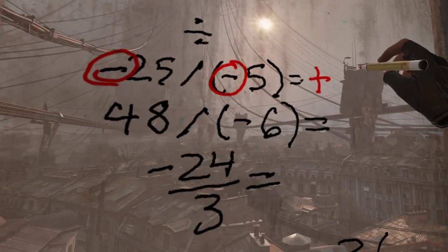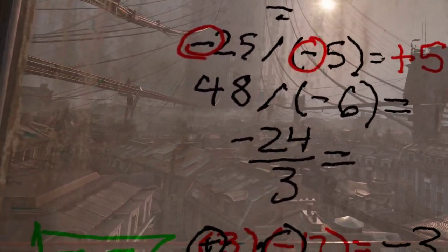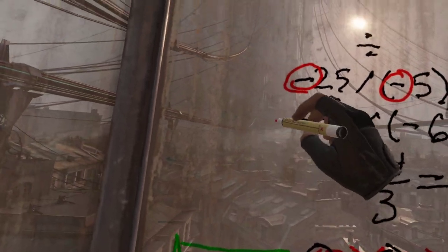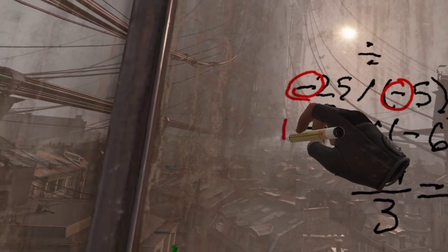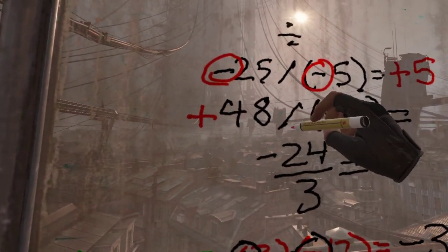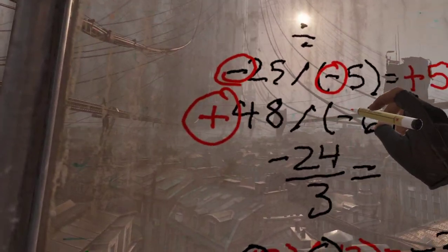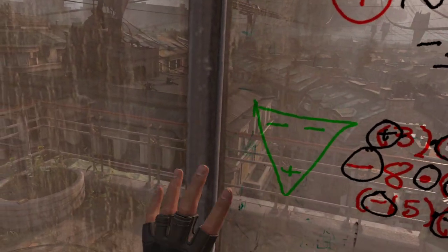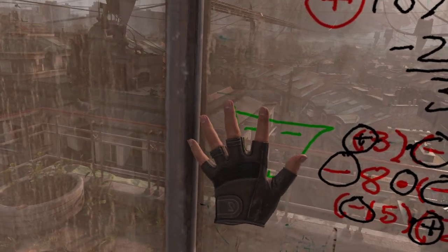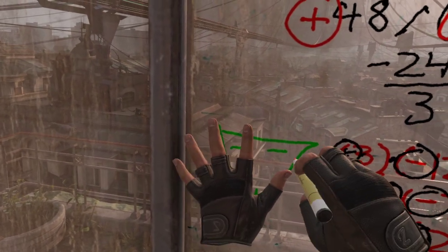Second one is positive 48 divided by negative 6. So we've got a positive and a negative. So if we cover up the positive and the negative here in the Doritoman, we're left with a negative. Your answer is negative. The quotient of 48 and 6, which is 8.